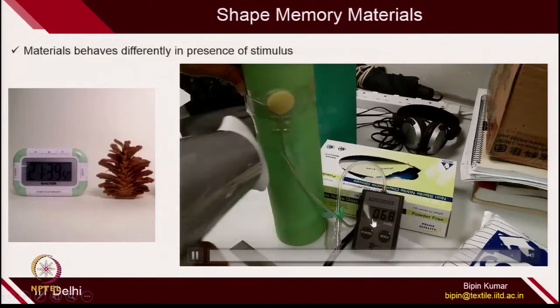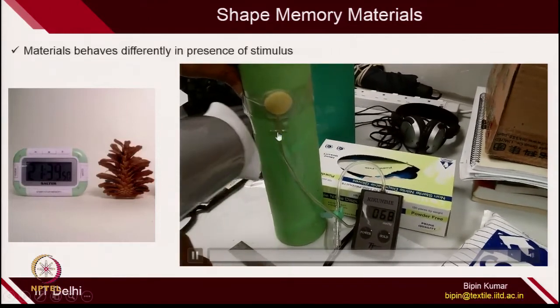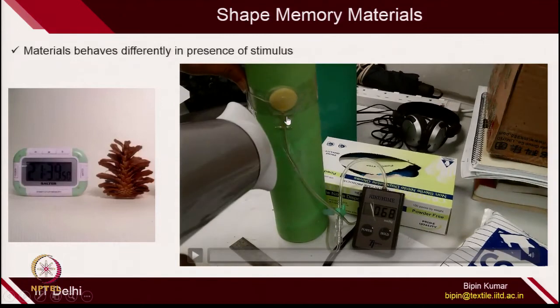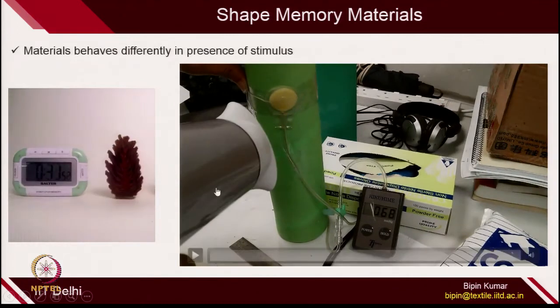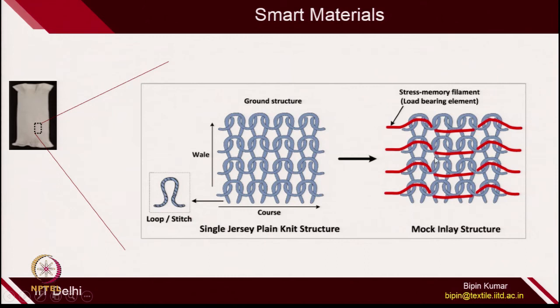For example, here I am showing this smart polymer — you are controlling the pressure on the surface. The same thing in knitting actually gives you a very useful platform where you can integrate these smart polymers in the form of filament. Either you can use tuck and float — such structures you can generate where the smart filament will be part of this fabric and you can get smart functions out of it.